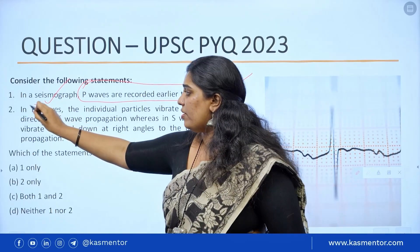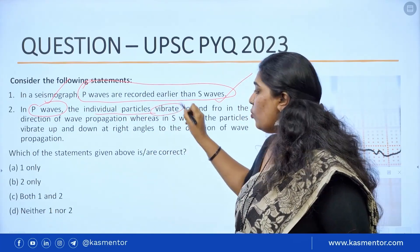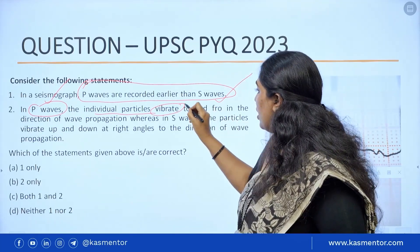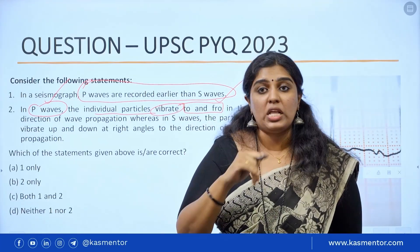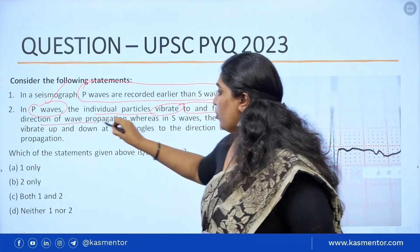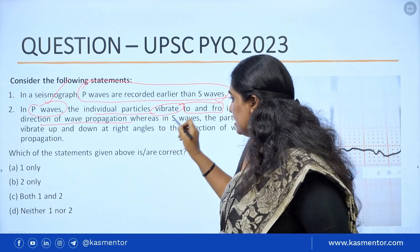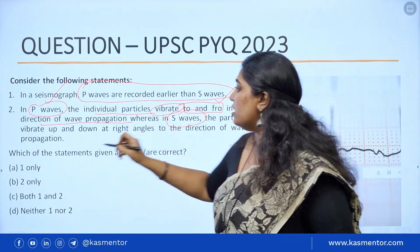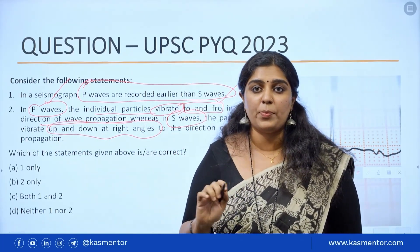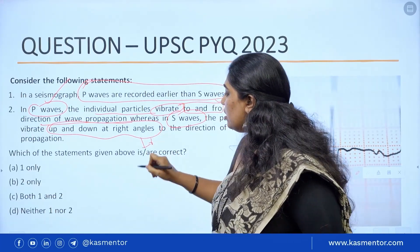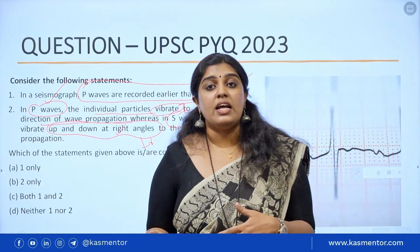In the second statement, it talks about P waves — the individual particles vibrate to and fro in the direction of wave propagation. In S waves, particles vibrate up and down — transverse propagation — perpendicular, meaning at a right angle to the direction of wave propagation. That statement is also true.